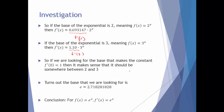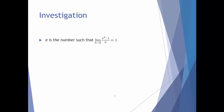It turns out that for f of x equals e to the x, if you take the derivative of e to the x, you get e to the x. It is the function — the only function — that is its own derivative. In fact, if you look up e, one of the definitions is the limit definition of e: e is the number such that this limit equals 1. That's how we know what e is.